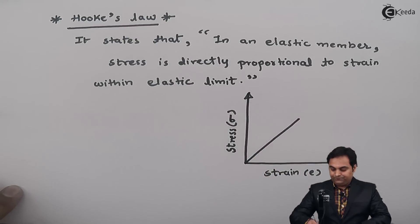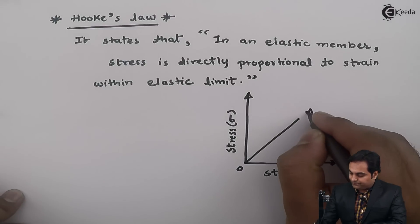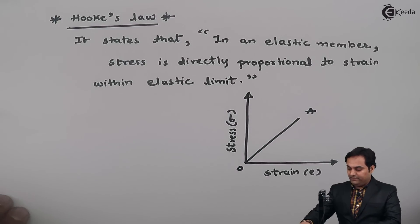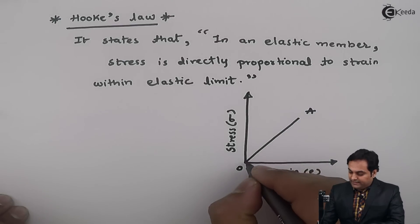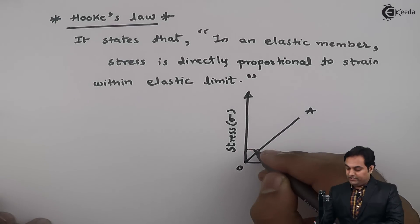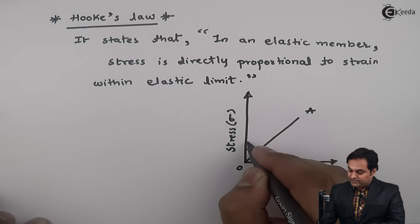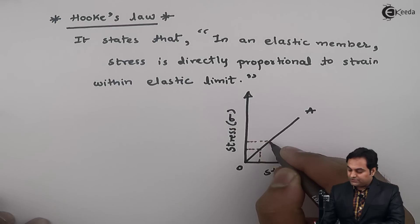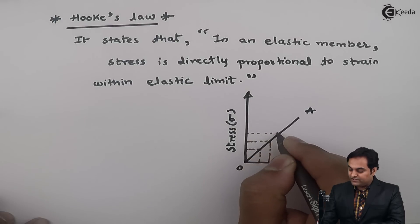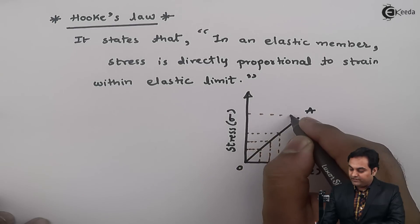The graph is linear; I'll call this region 0 to A. Within this region, as I increase stress, strain also increases. Again if I increase the stress value, strain increases, and so on up to the final value.